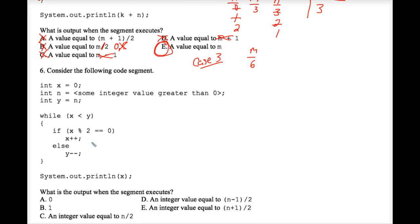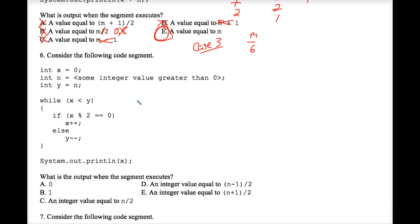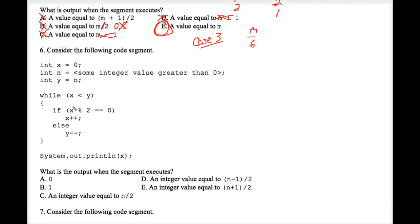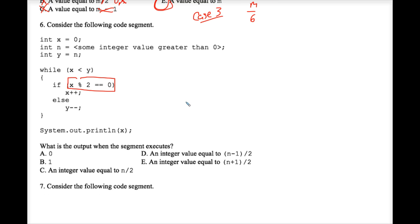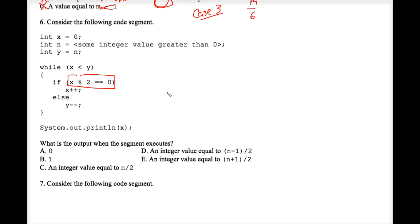Number six makes use of the mod operator. It's another problem where we have to imagine values for n. We're checking whether x is even or odd — if it's even, one thing happens; if it's odd, another happens. I'll let you do that as an exercise since it's very similar to problem five.